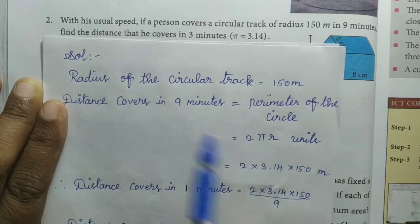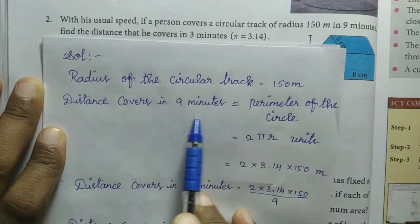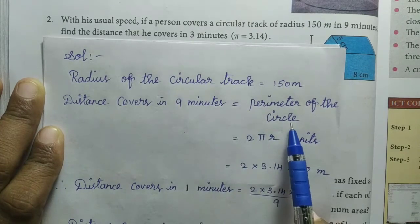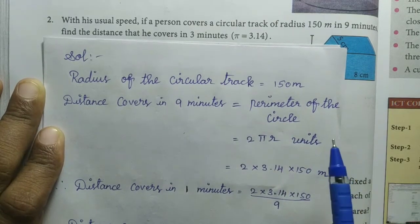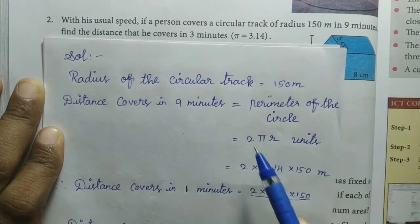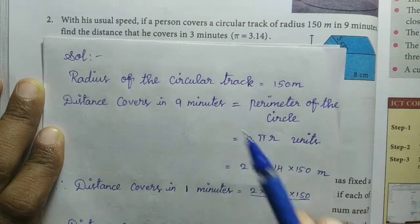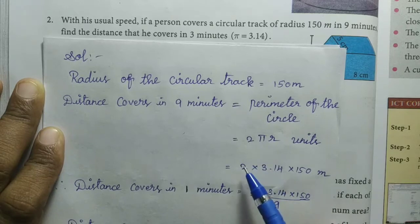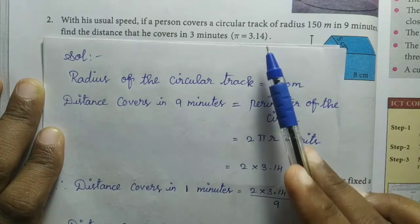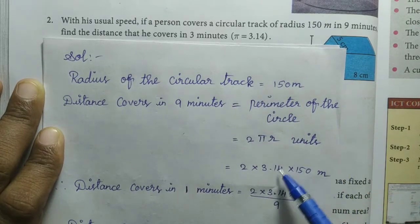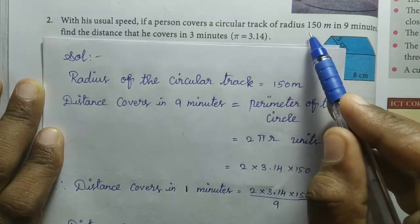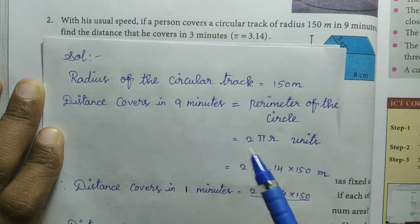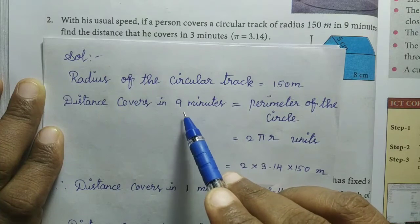So here is the formula: 2πR. That is 2 × 3.14 × R. The circular track radius is 150 meters, so we apply this formula. The distance covered in 9 minutes equals the perimeter of the circle, which is 2πR.